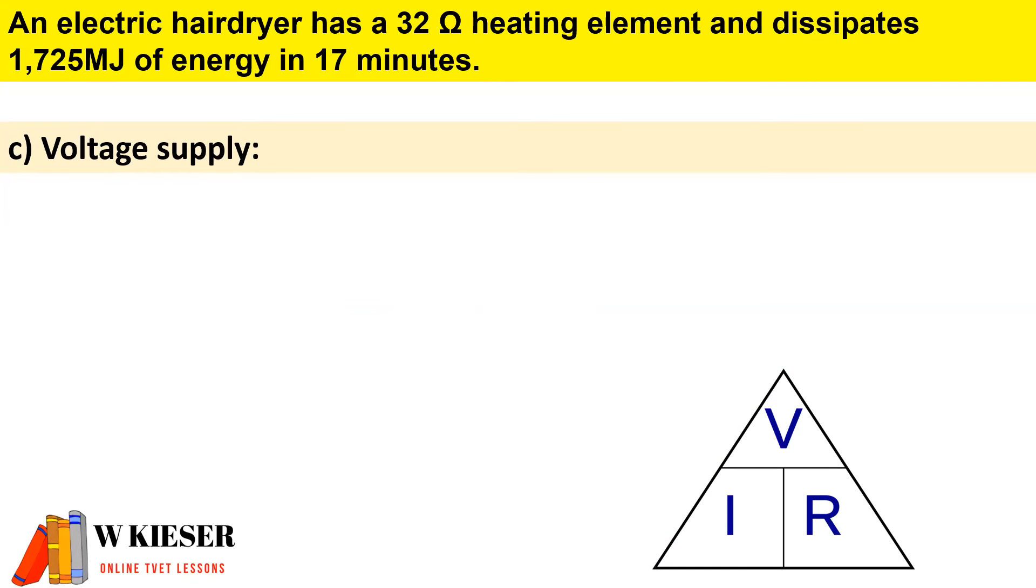To calculate the voltage supply, we will use Ohm's law, which is current multiplied by the resistance. And the current in the circuit of 7.27 multiplied by the resistance of the hairdryer heating element of 32 ohms, and that gives us 232 volts.